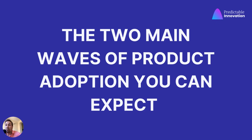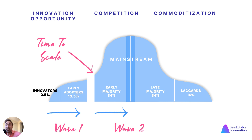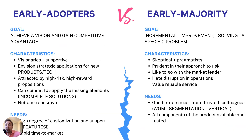The two main ways of product adoption that we can expect — and this will always happen in technology markets — are: the first wave of adoption with innovators and early adopters, that's the early market; and the second wave of adoption starting in the early majority, going all the way through early and late majority. The mainstream is where the biggest opportunity is. This course is about accelerating the time to scale — helping you go from the first wave to the second wave. This is also the point where markets start to be more crowded with competition.